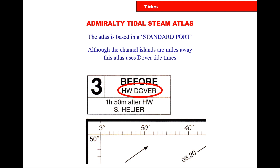The atlases are based on a standard port. This one uses Dover — a lot of Admiralty tidal stream atlases will use Dover as their reference point. To find out where your reference point is, look at the top of the tidal stream atlas and it will tell you there. The ones you're going to use will be the RYA Training Almanac, and everything in there is referenced off Victoria. So when you use a tidal stream atlas or tidal diamonds, everything is referenced off Victoria.